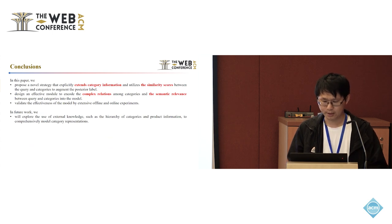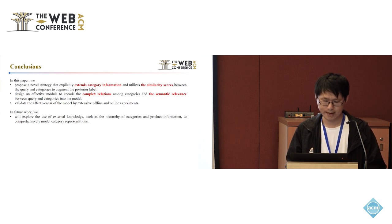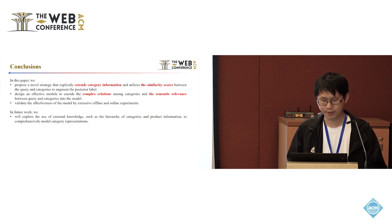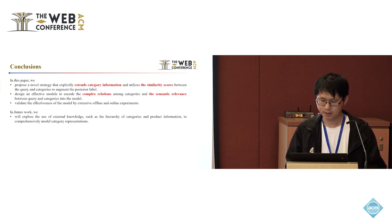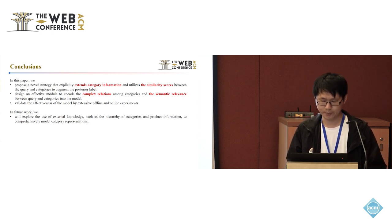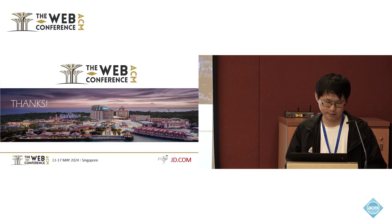In this paper, we propose a novel strategy that explicitly extends category information and uses similarity scores between query and category to augment posterior labels. We design an effective module to encode the complex relations among categories and the semantic relevance between queries and categories into the model, and validate its effectiveness through extensive offline and online experiments. In future work, we explore the use of external knowledge such as the hierarchy of categories and product information to comprehensively model category representation. Thank you for listening.